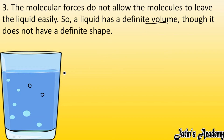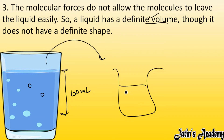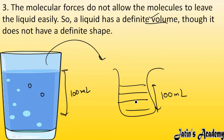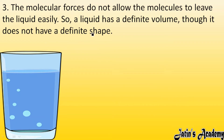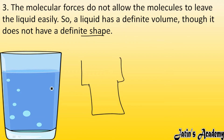Due to this force of attraction, liquids have a definite volume. For example, if there is 100 ml of water and I pour it into different shaped containers, it will still take up 100 ml in each — the volume remains the same. Although liquid does not have a definite shape — the shape changes depending on the container — the volume of the liquid stays the same.